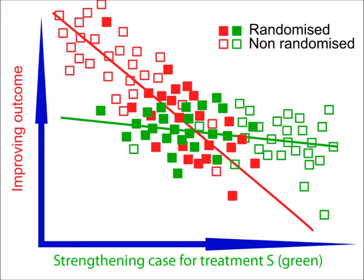It may help to look at how this would work in practice. A null-seeking trial would be run as an internet website. When a patient agrees to participate, their details including factors that influence the index of indication would be entered. The investigating clinician and patient then refer to a display of results of the trial gathered so far – a plot of outcomes for other cases on the y-axis against their index of indication on the x-axis. On the strength of the results viewed, the investigating clinician and patient decide whether to have treatment S, treatment M, or to be randomised. They go on to have their treatment and their outcome is measured and added to the database.